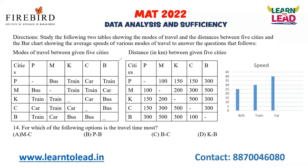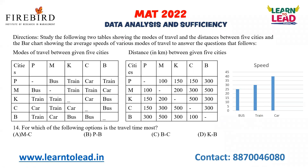For which of the following options is the travel time most? From K to B, traveling by bus: the speed of the bus is 25 km/h and the distance between K to B is 300 km, so 300 by 25 equals 12 hours — the travel time is most here.